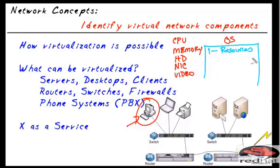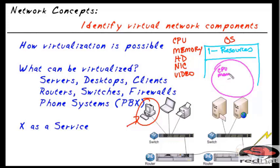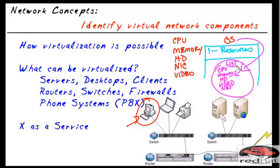What if we made a pretend environment — a list of CPU, memory, hard drive, video, network interface card — just identifiers, not really the real resources? When the operating system boots up, instead of looking at real hardware, it looks at this list and thinks it has all those resources. We could fool it. And that's what virtualization is doing.